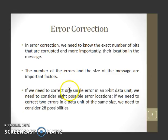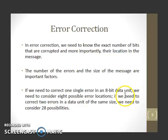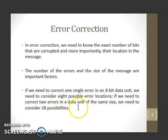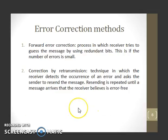If we need to correct one single error in an 8-bit data unit, we need to consider 8 possible error locations. If we need to correct two errors in a data unit of the same size, we need to consider 28 possibilities.